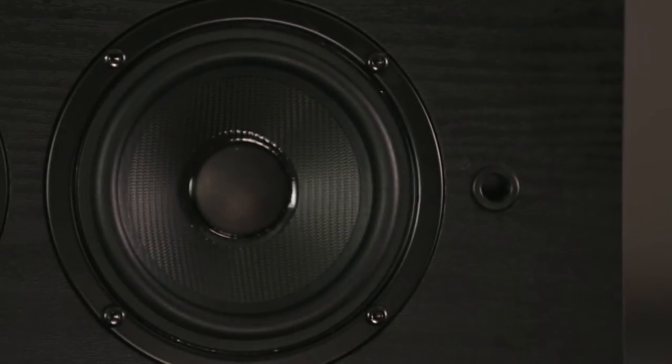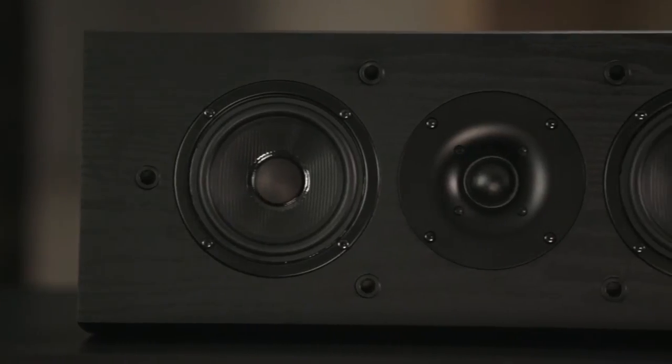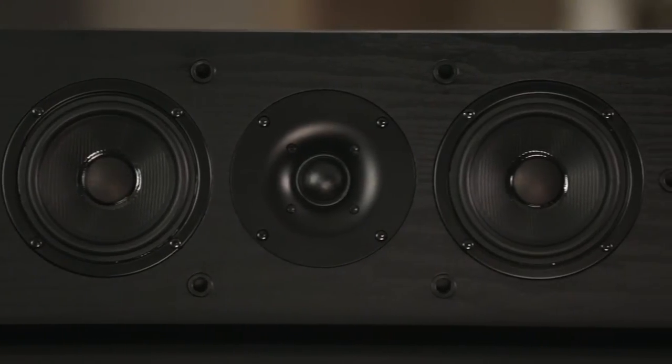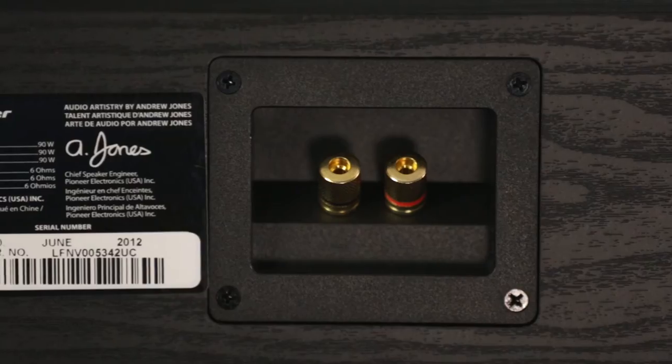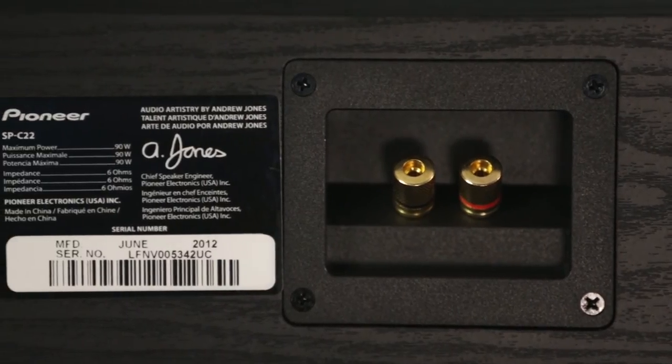This is the new C22 centre channel loudspeaker developed from the original C21. One of the most noticeable changes is the size of the cabinet. We responded to feedback on online forums regarding the size of the original that was perhaps a little too large to comfortably fit in lots of furniture.